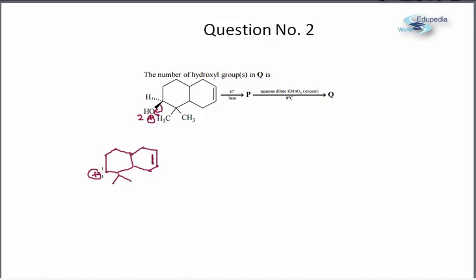As you can clearly see this is a 2 degree carbocation and there can be a 1,2 methanide shift. This 1,2 CH3 minus shift can take place and as a result of that shift we get a more stable carbocation.